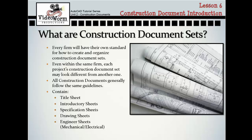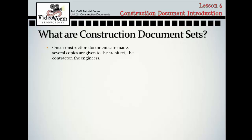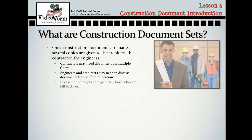Once you've got all your construction documents done, printed, and signed off on, what happens? Several copies are given to the architect, the contractor, and the engineers. Contractors may need documents on multiple floors, engineers and architects may need to discuss documents while in different locations, and if one copy gets damaged, they have others to fall back on. Once they're done, they get printed over and over and given to various people working on the project.